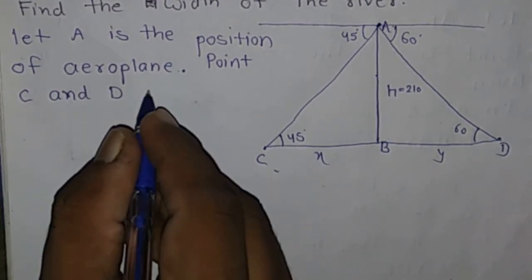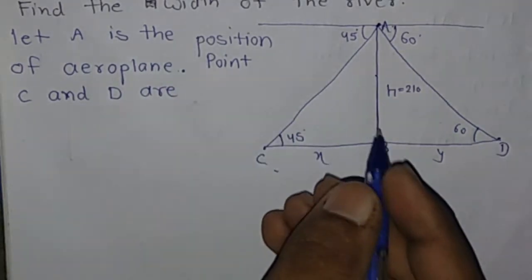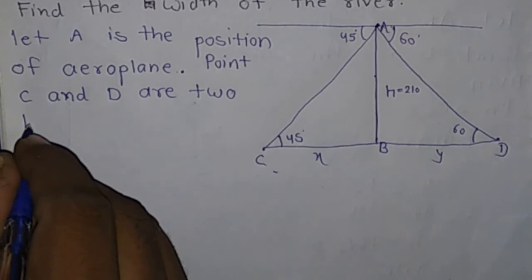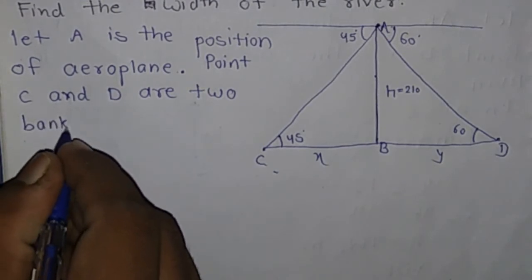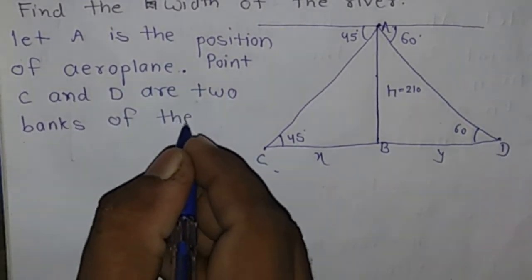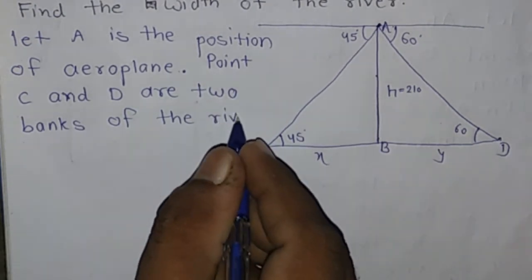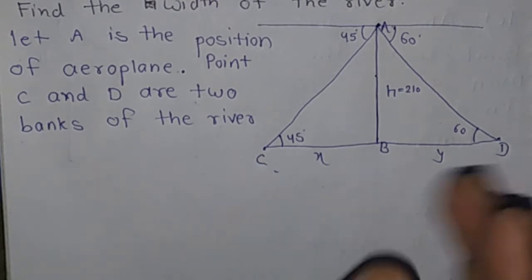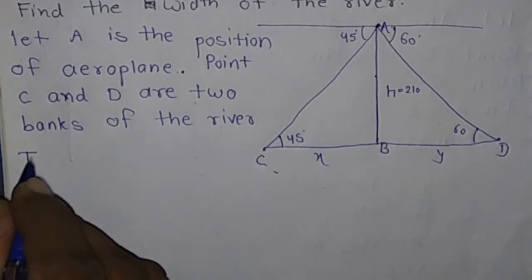C and D are two banks of the river, and we have to find the width of the river, which means we have to find CD.